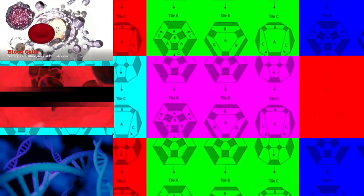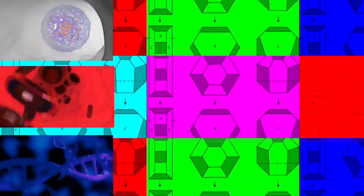Prokaryotic cells are usually much smaller than eukaryotic cells. Therefore, prokaryotes have a larger surface area to volume ratio, giving them a higher metabolic rate, a higher growth rate, and as a consequence, a shorter generation time than eukaryotes.